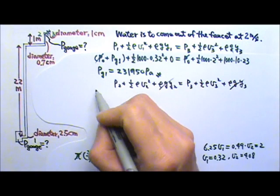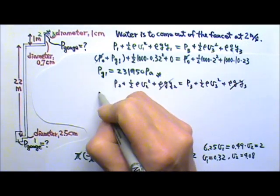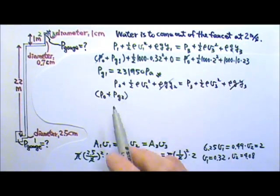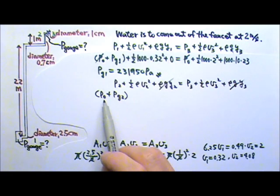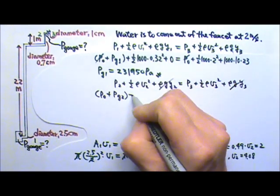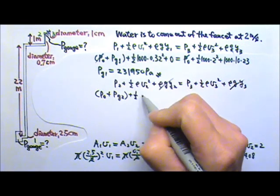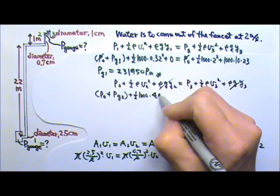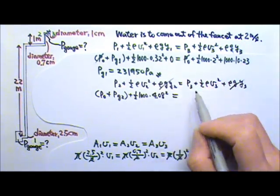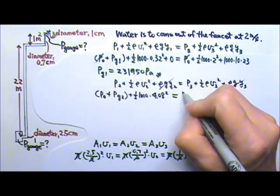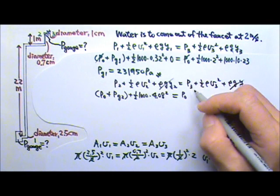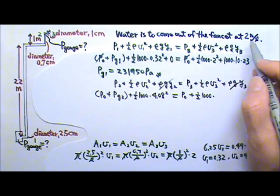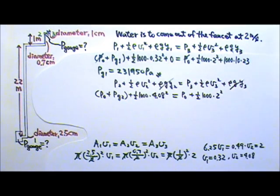At 2, we're looking for the gauge pressure, so I can say P2 is P0 plus the gauge pressure at 2, because the absolute pressure is the atmospheric pressure plus the gauge pressure. At 2, the water density 1000 is flowing at a speed 4.08. That should equal to the pressure at 3, which is the atmospheric pressure because the water is touching the atmosphere at the faucet opening. The density of water is 1000 at 3. The water is flowing at 2 meters per second.